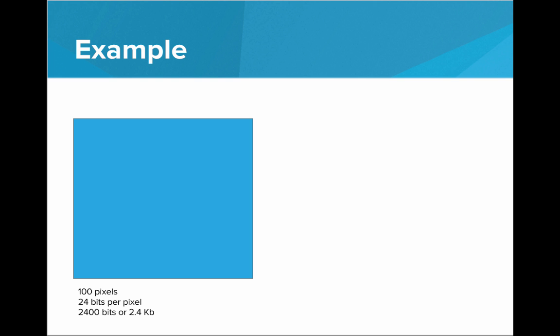For example, say we had an image that was just a massive blue square. We have 100 pixels of blue. That's 100 pixels and 24 bits per pixel, RGB, making it 2,400 bits or 2.4 kilobits.